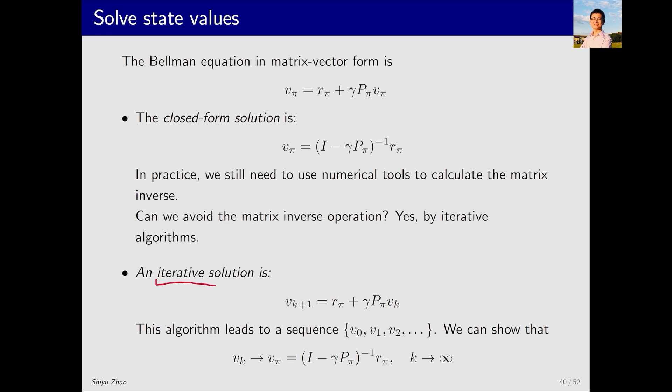Then we can use an iterative solution. The iterative solution is an equation like this. It is similar to the Bellman equation, with the difference being that v_π is replaced by v_k on this side and by v_{k+1} on this side. How do we use this algorithm? First, from step 0, we can make any arbitrary guess about what v_π equals, such as setting all values to 0. Then, by substituting v_k into the right-hand side of the equation, we can calculate v_1 on the left-hand side since all these values are known beforehand. Subsequently, substituting v_1 back into the right-hand side allows us to calculate v_2 on the left-hand side, and substituting v_2 back into the right-hand side allows us to calculate v_3 on the left-hand side, and so on. This process continues, yielding a sequence of v_0, v_1, v_2, all the way to v_k.